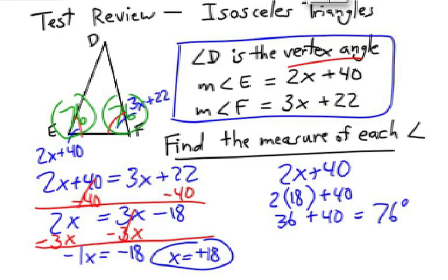What would the vertex angle be? That's right, all three angles add up to 180. So we subtract 180 minus 76 minus 76 and we get 28 degrees. The three angles are 76, 76, and 28.